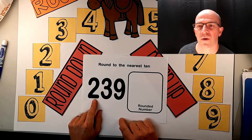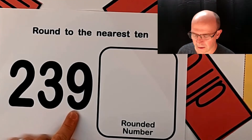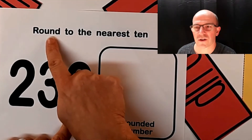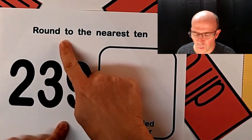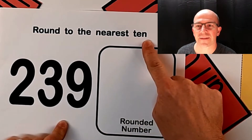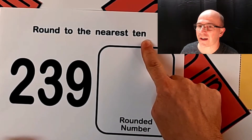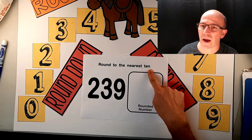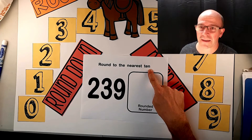I'd like to take another minute to round a bigger number. If you look here, we have the number 239. Our instructions say round to the nearest 10. Don't be afraid — if we follow our rounding rules, we're going to get this.